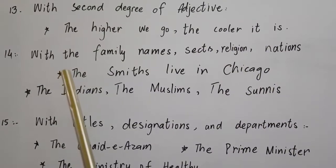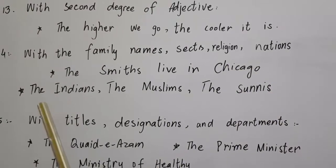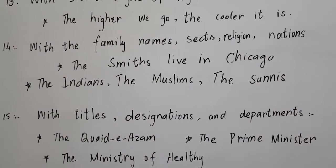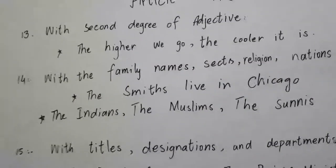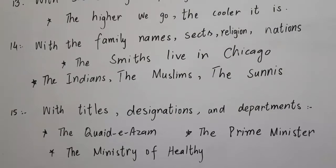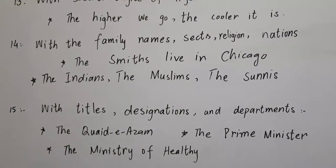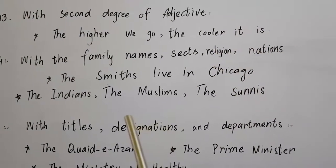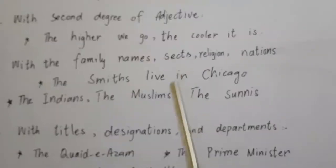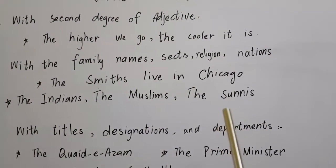Rule number 14: 'the' is used with family names, sects, religion, and nations. For family names: 'Smith' is a person's name, but 'the Smiths' is a family name — 'The Smiths live in Chicago.' For religion: the Muslims, the Hindus. For sects: the Sunnis, the Shias.